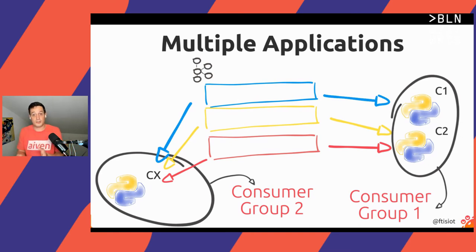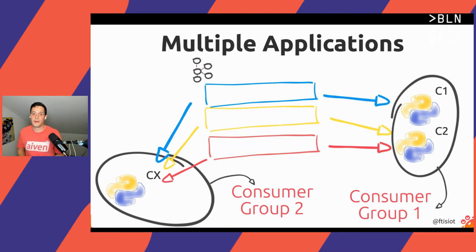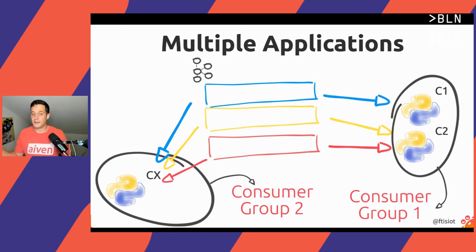Just a string lets you have multiple consumers working together to consume all messages. Or if you change the string, you have consumers defined as different applications.